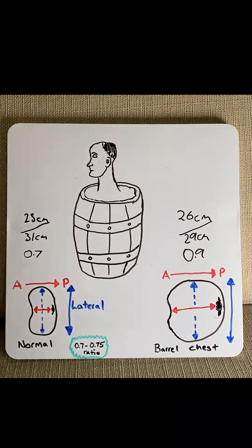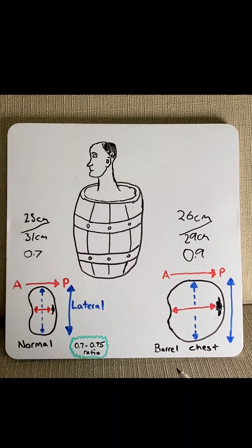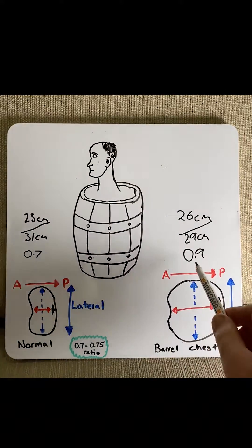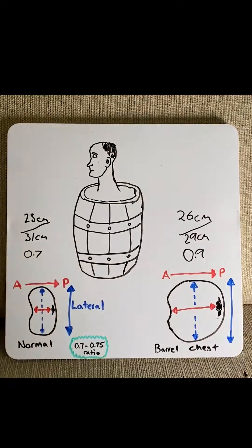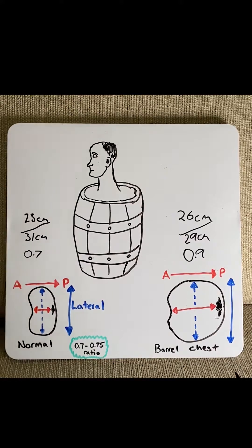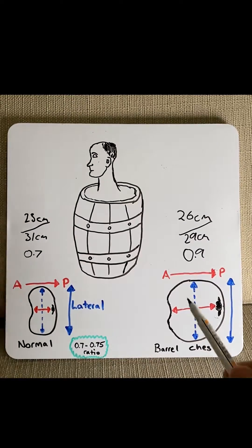Therefore, in barrel chesting, the ratio is anything above 0.9. The proposed mechanisms of what causes barrel chesting are as follows.